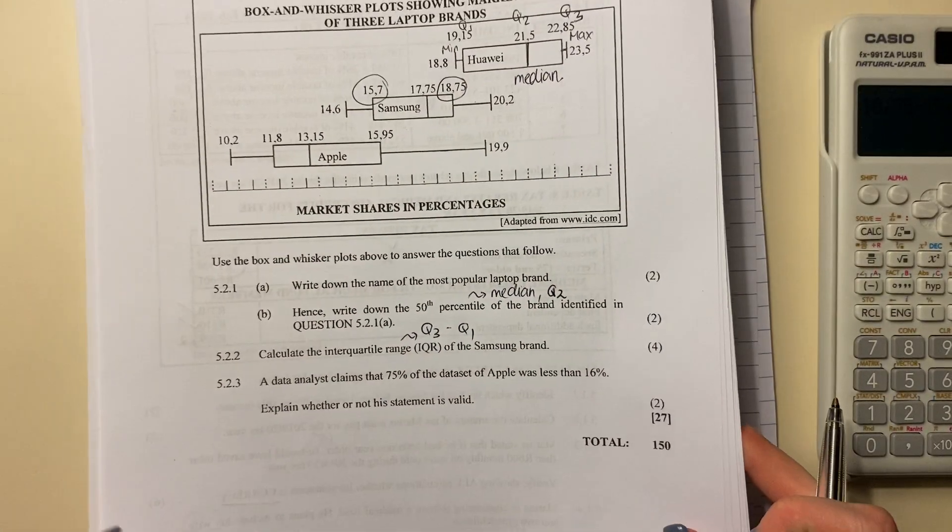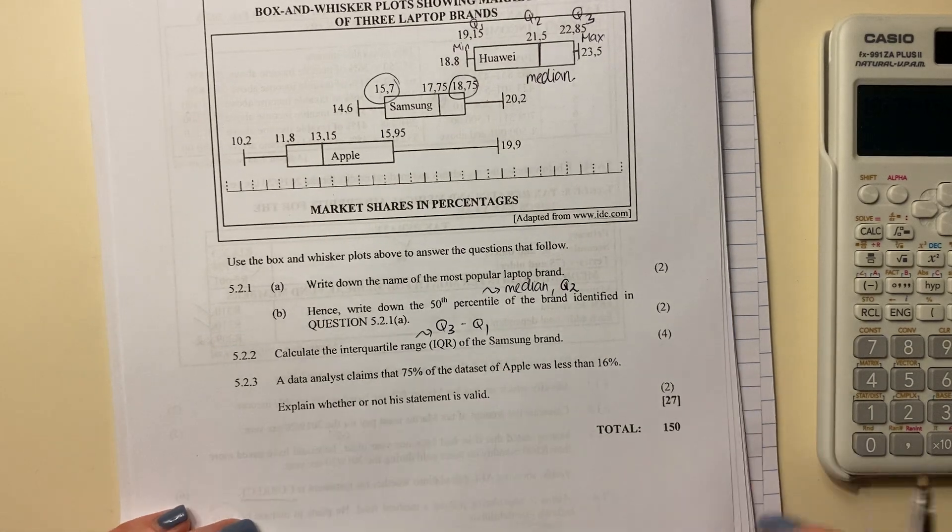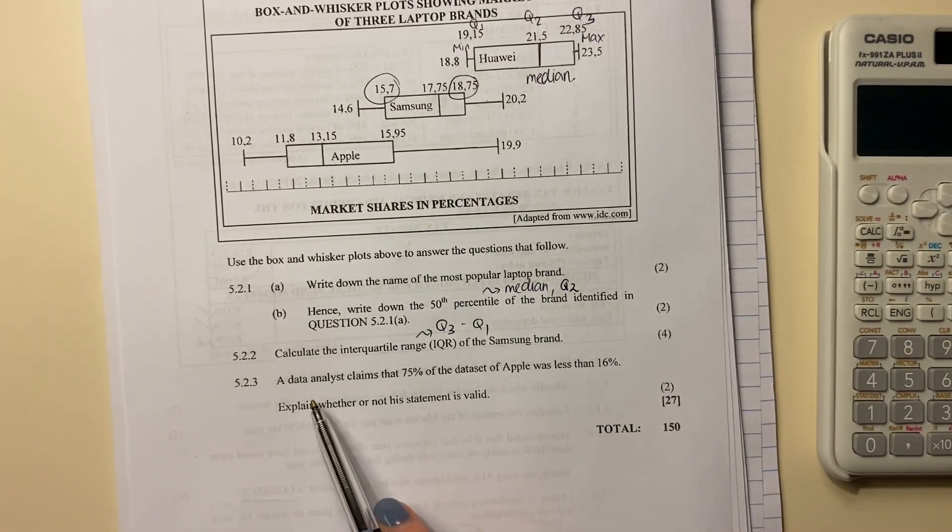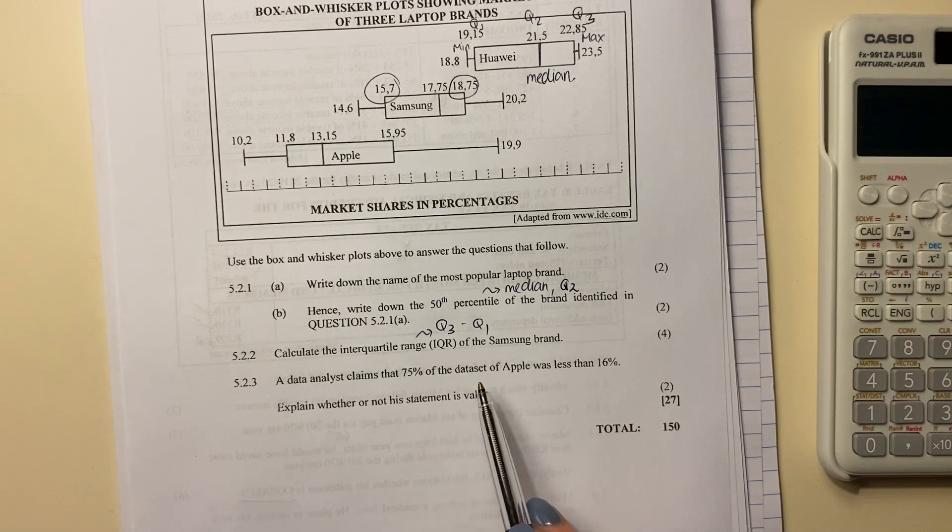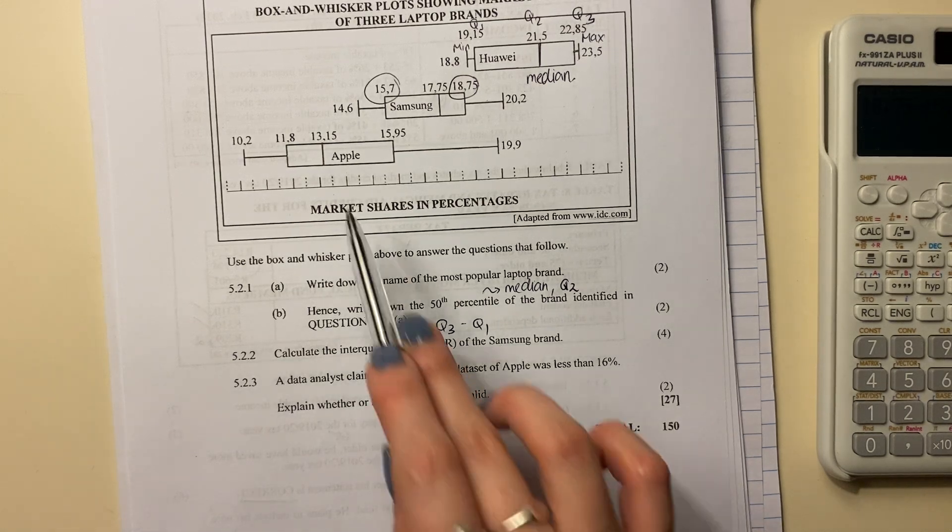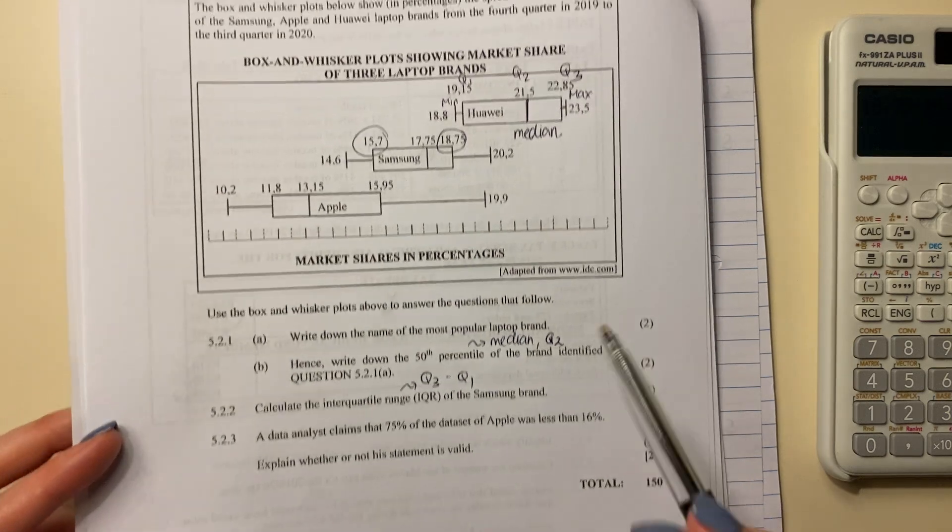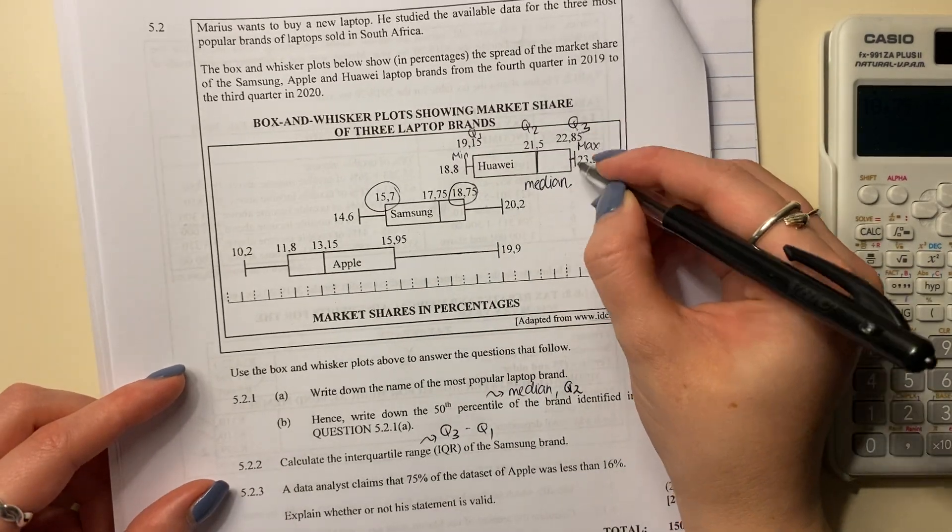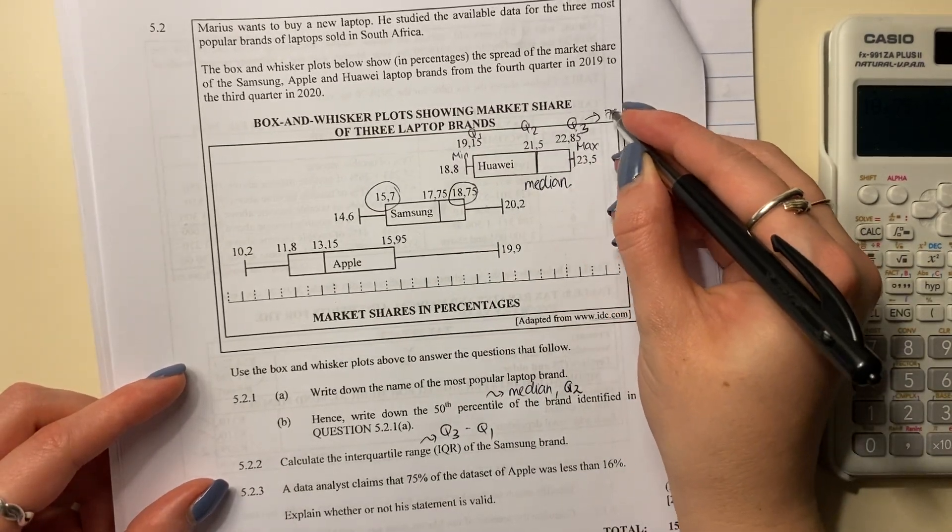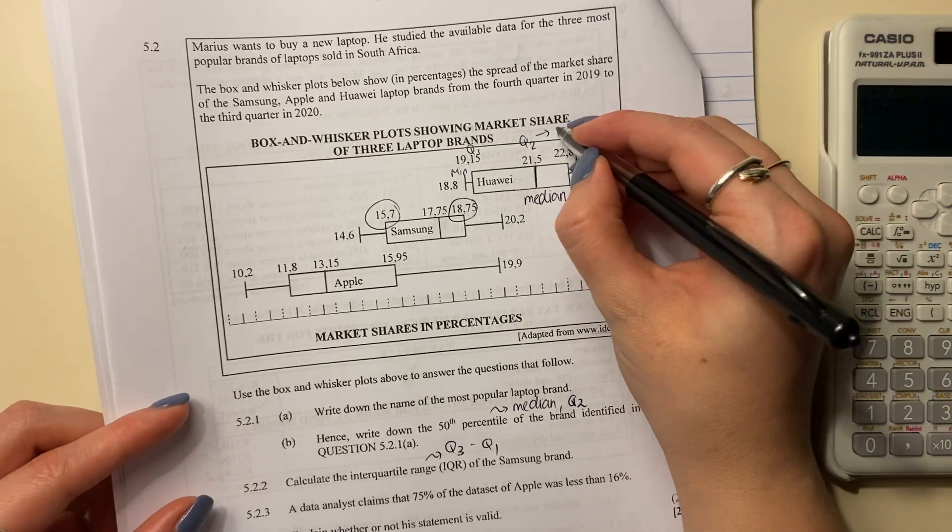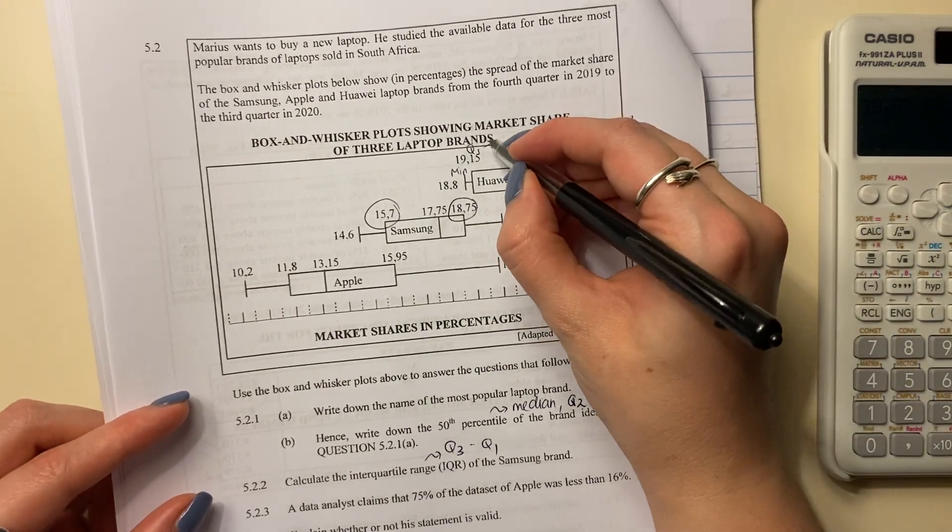Last question. It says a data analyst claims that 75% of the data set of Apple was less than 16%. Explain whether or not the statement is valid. Now, quartile 3 is the same as 75%. Quartile 2 is the same as 50%, and quartile 1 is the same as 25%.